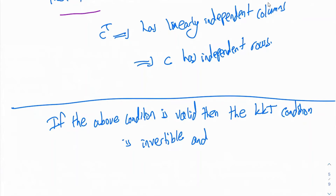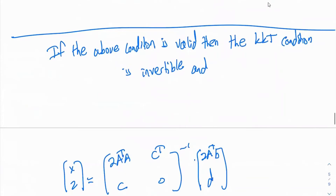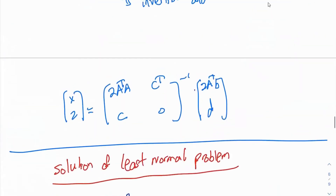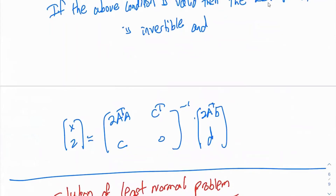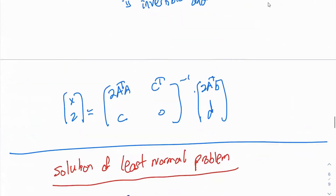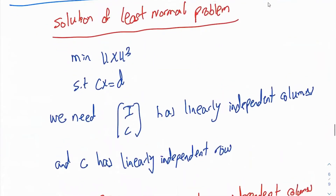If the above conditions are valid, then the KKT matrix is invertible, and the solution is calculated as the inverse of that matrix. Now let's take an example: the least norm problem. This is a problem you see a lot in the literature. We want to minimize the norm of X squared subject to CX equal to D.